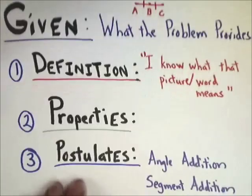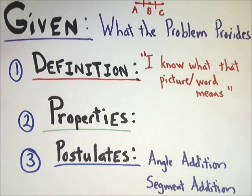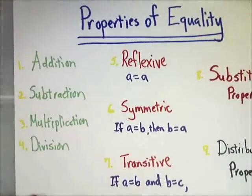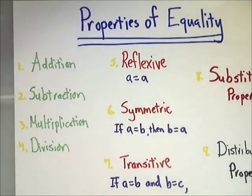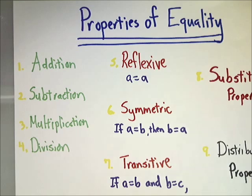The next set is properties. There are a ton of properties you can use to prove things. We're going to focus on about nine very simple ones - don't get overwhelmed. The first group is properties of equality. The basic four are addition, subtraction, multiplication, and division.